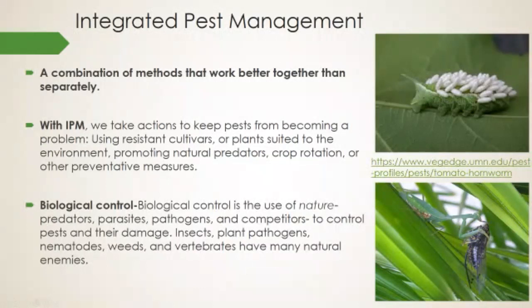Any organism — insects, pathogens, nematodes, weeds, birds, animals — has some kind of natural enemy we can use against them. In the case of caterpillars and tomato hornworm, we have parasitic wasps, but we can also use BT — Bacillus thuringiensis — which is essentially a bacterial pathogen for caterpillars and tomato hornworms. There's something we can encourage that can help defend against any of these kinds of things if we're crafty enough.